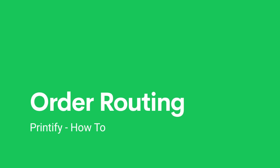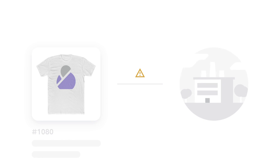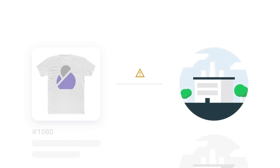In this video, we'll show you how to enable order routing in your Printify account. This feature is useful in cases where one or more of your chosen print providers are temporarily unavailable. Once you enable this feature, your order will be routed automatically to a different print provider for fulfillment so that you can keep your business running smoothly. Let me show you how to do that.